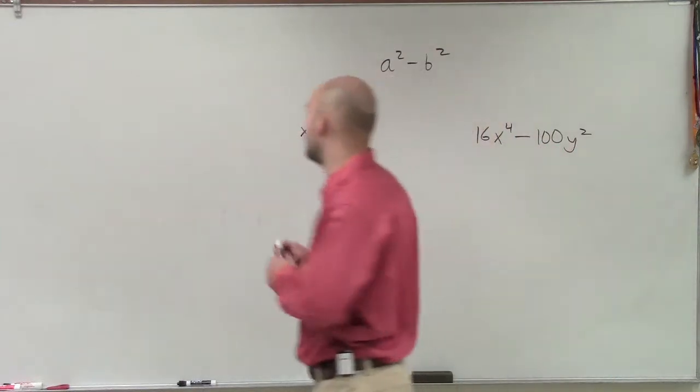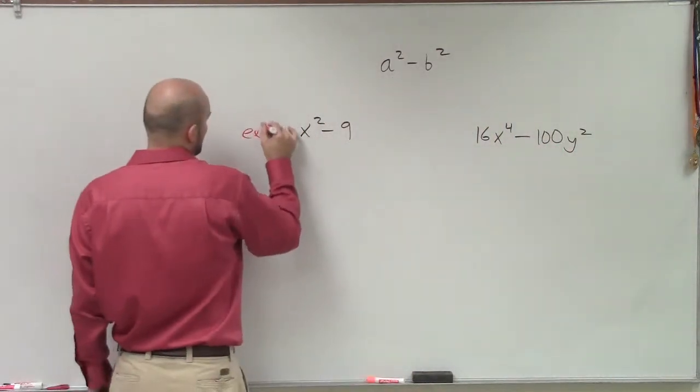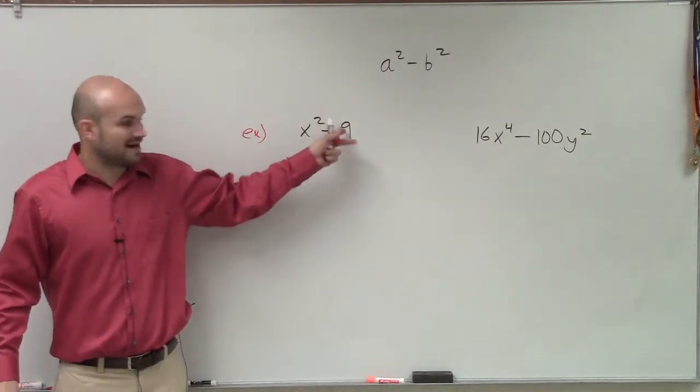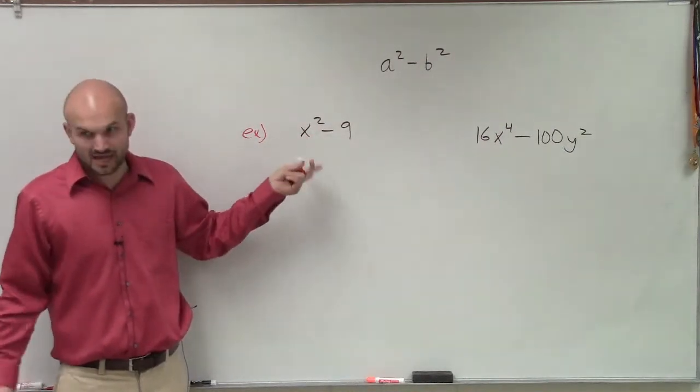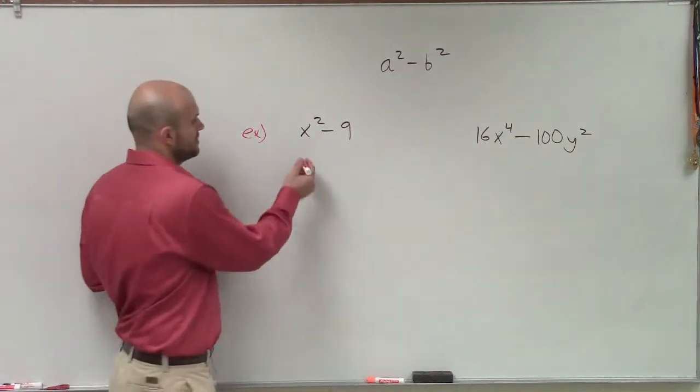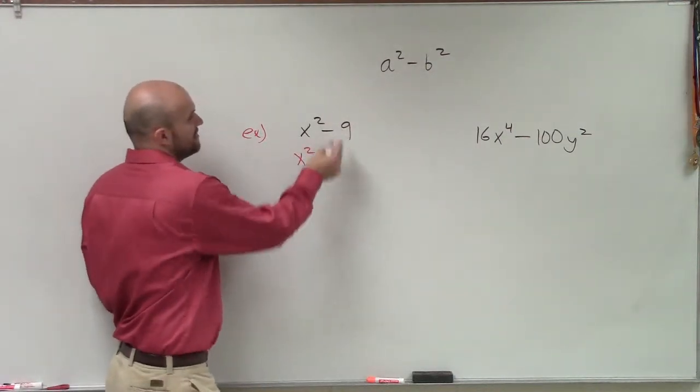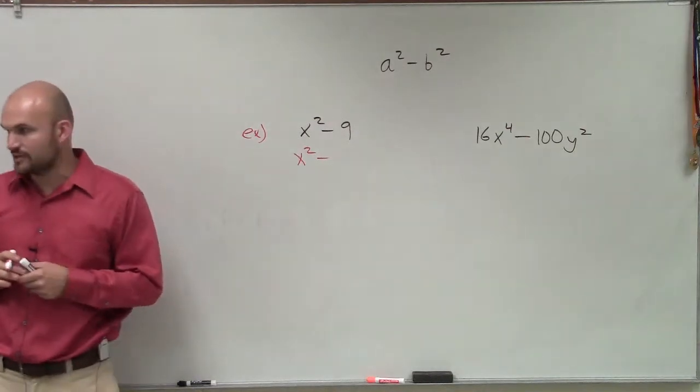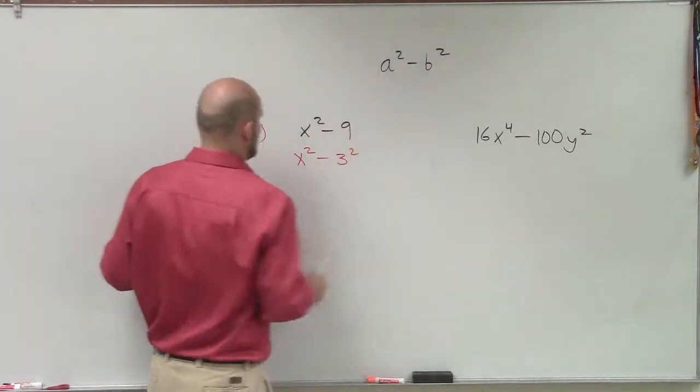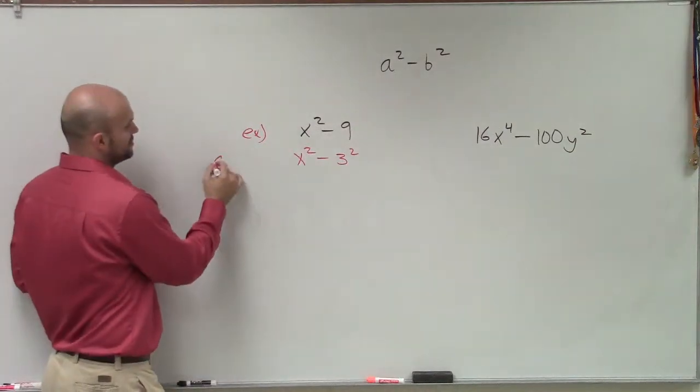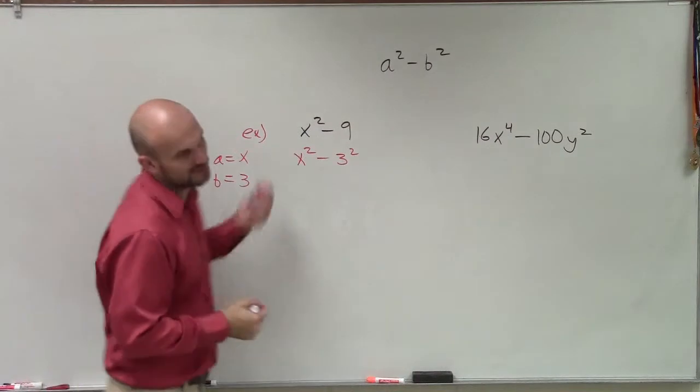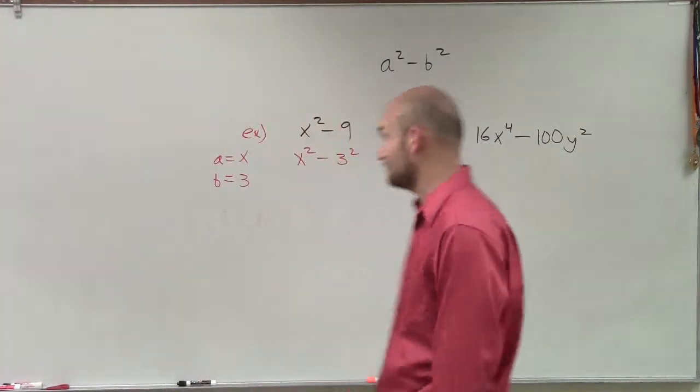So let's go and look at example number one. In example number one, what we need to make sure we have is a squared number minus another squared number. So is x squared, can that be written as a number squared? Yes, just x squared. And then can nine, can I rewrite that as a number squared? Three squared, right? So therefore, if I wanted to get even more, I could say a equals x, b equals three. You don't have to do that, but I'm just kind of breaking it down for you.